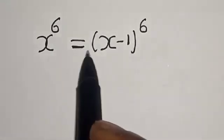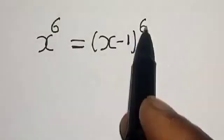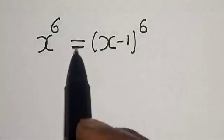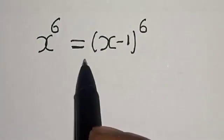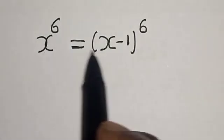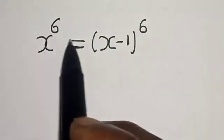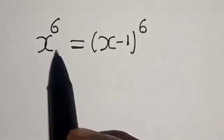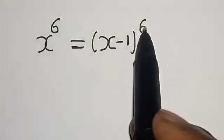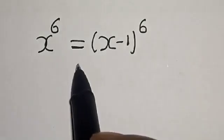x raised to power 6 is equal to x minus 1 raised to power of 6. Hi everyone, welcome to my class. In this class we want to find the value of x from this given polynomial equation: x raised to power 6 is equal to x minus 1 raised to power 6.